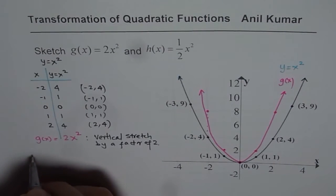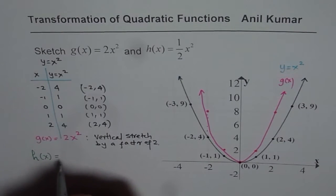Now let us see how to do the second function which is h of x equals to half x square.